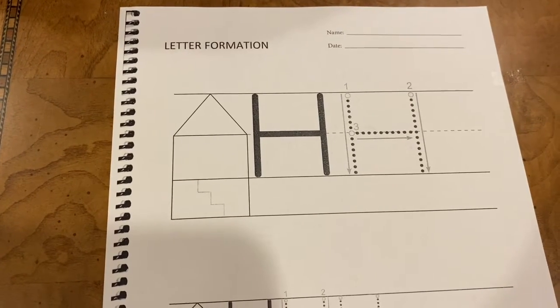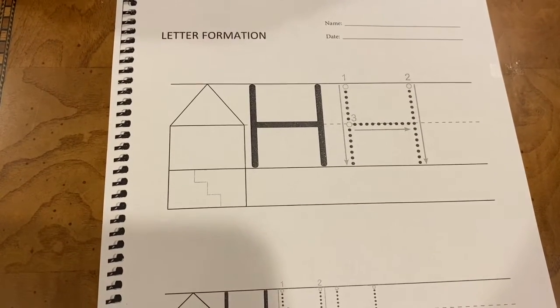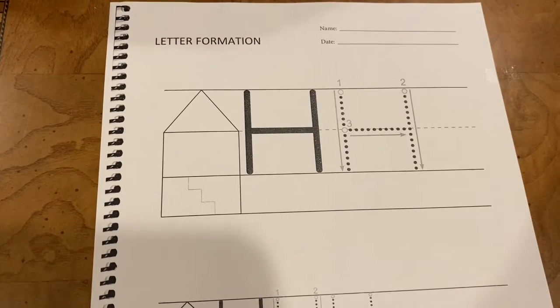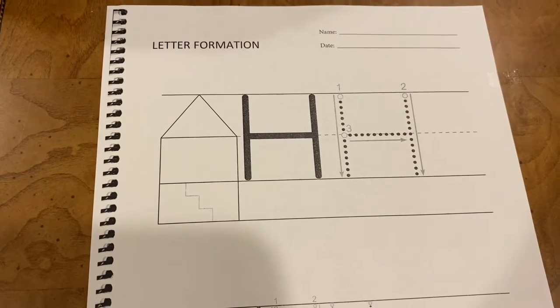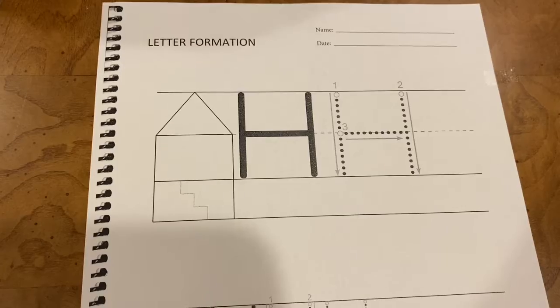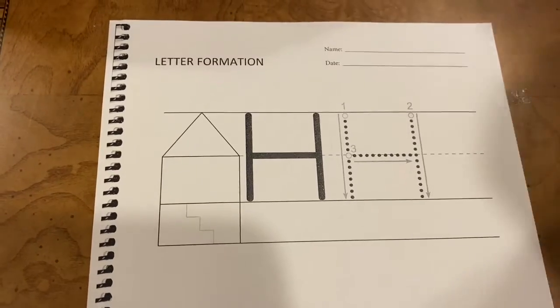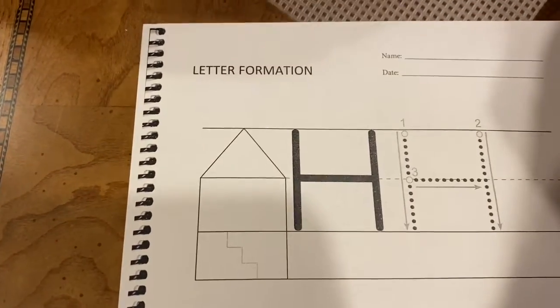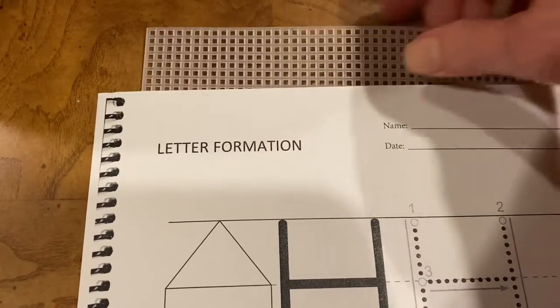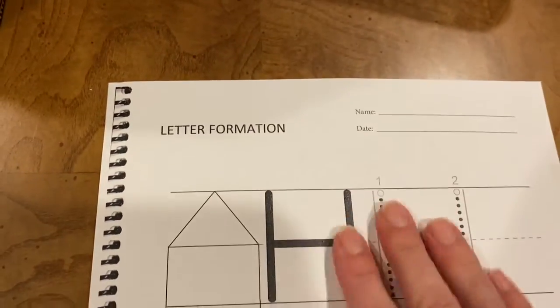Take your handwriting book, your green handwriting book, and turn to page 29. Let's learn to write the letter H. Take your bumpy screen and put it behind just page 29, so it's right behind 29.